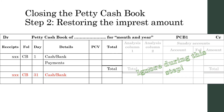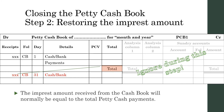Step 2: Restoring the impressed amount. Remember, the amount spent is the amount that must be received again to restore the impressed amount at the end of the month, and receipts are recorded on the debit side.